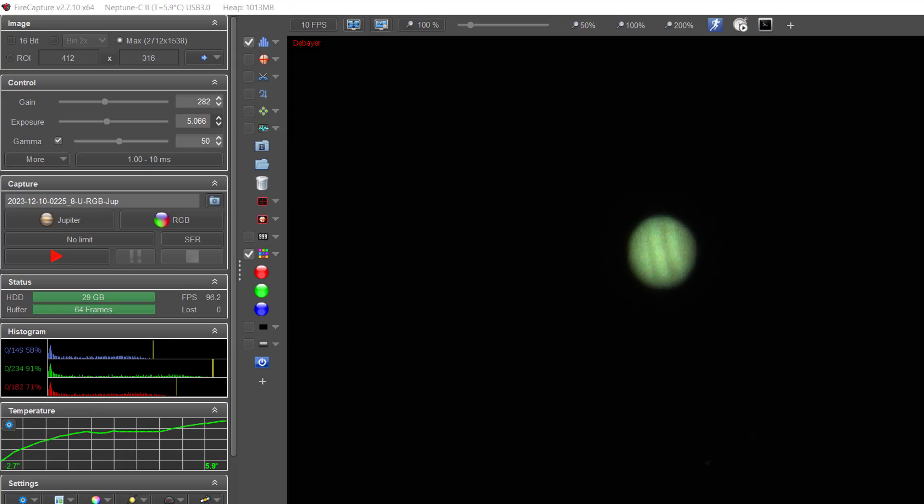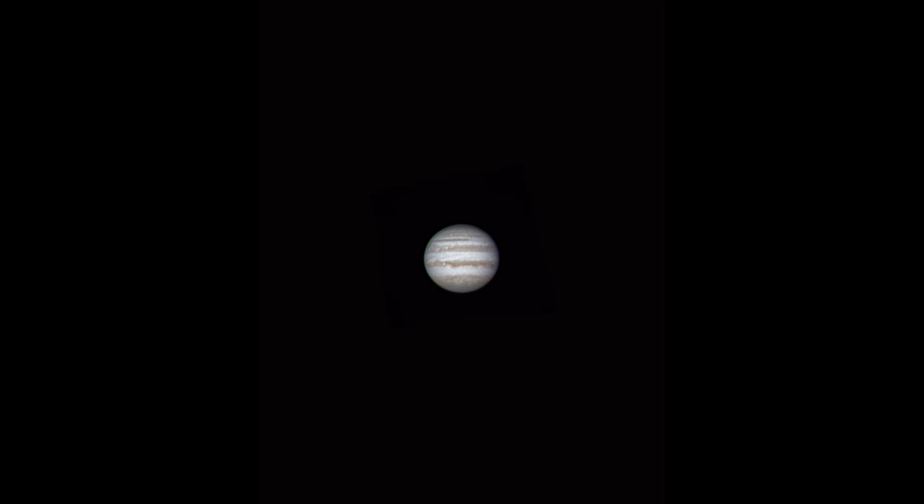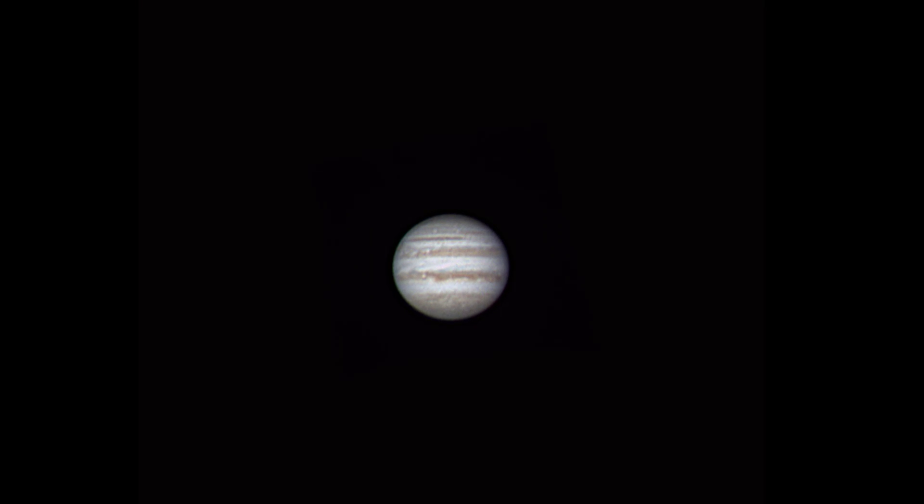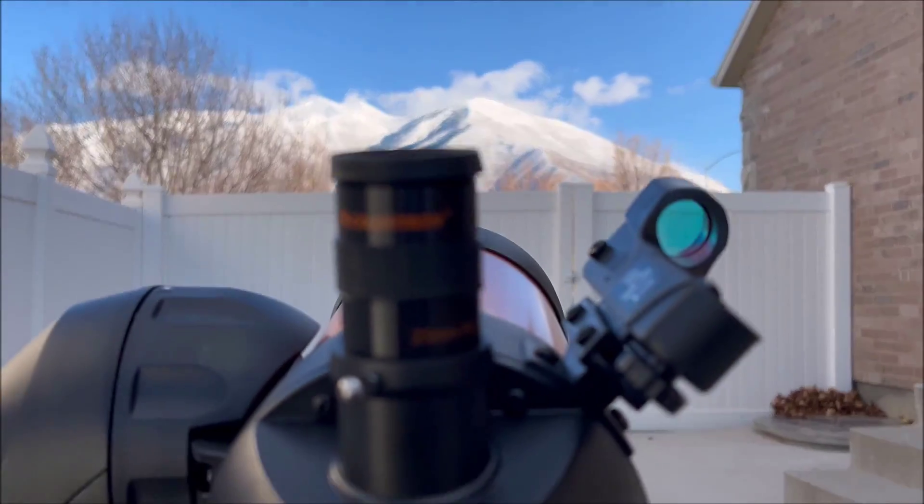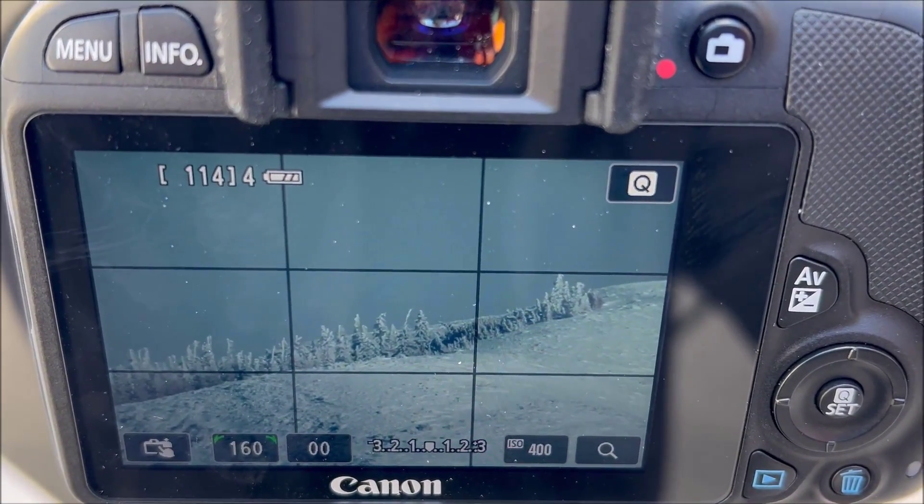And just to show you what a little 4-inch Mac cast can do, this is Jupiter with a Player One Astronomy Neptune C2 camera and a Celestron UV IR cut filter. And you can see the belts clearly there. And once I stack this, you'll actually be able to pull out a lot of detail in the clouds of Jupiter and see a lot of those storms. This little 4-inch Mac also provides some awesome terrestrial views as well, as you can see by this snowy, scenic mountain shot.